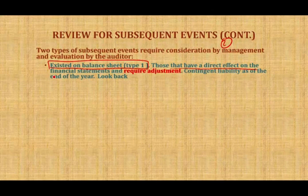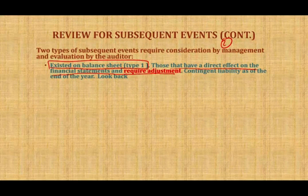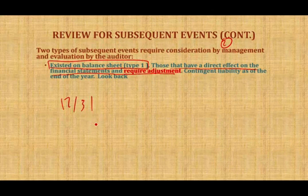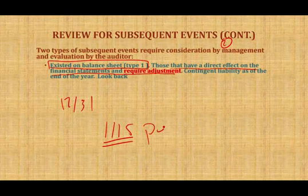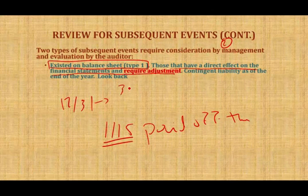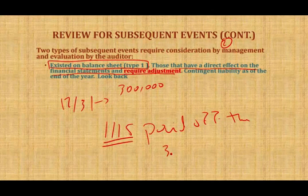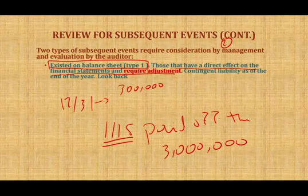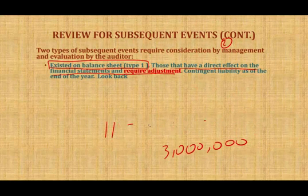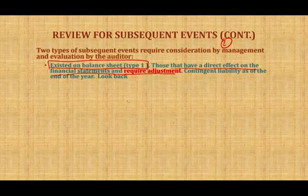Type 1 events have a direct effect on the financial statements and require adjustments. For example, let's assume we accrued a contingent liability of $300,000 as of December 31st. Then on January 5th, 2017, the jury ordered us to pay $3 million. This is a subsequent event requiring adjustment because the event existed at December 31st — we only booked one-tenth of the amount. We look back to see if the event existed on December 31st; if so, an adjustment is required.